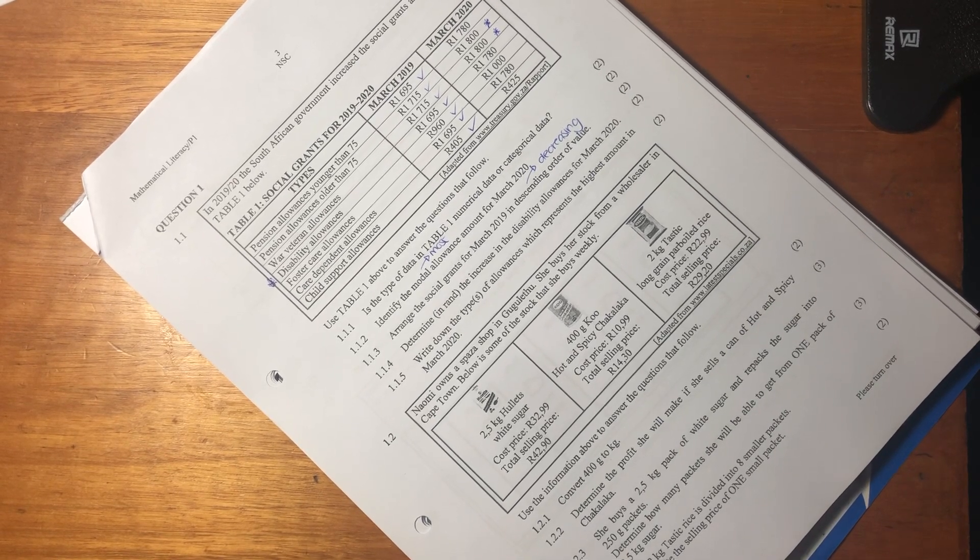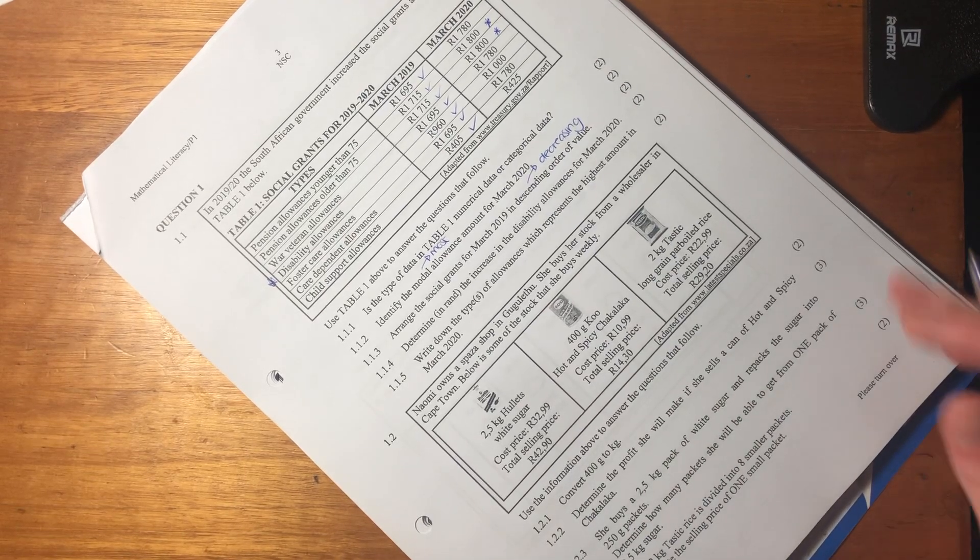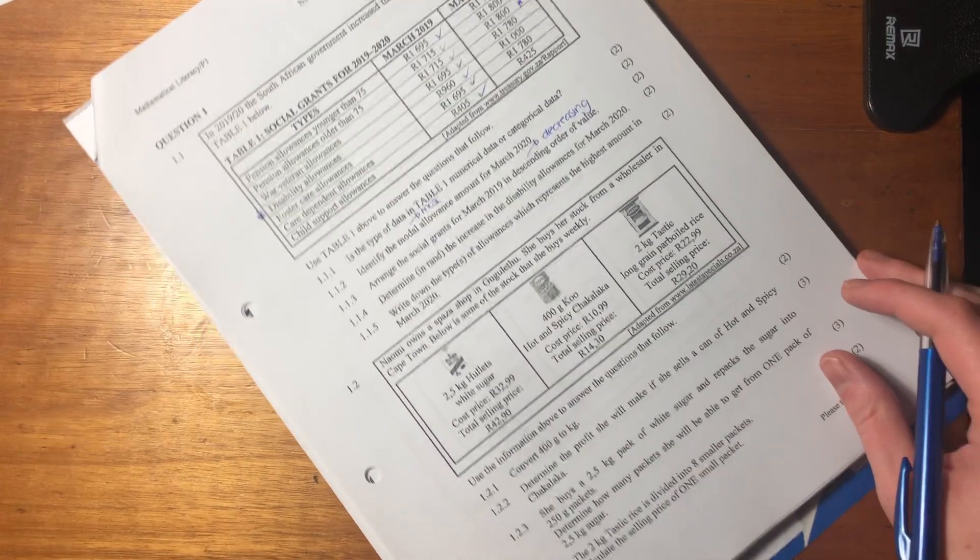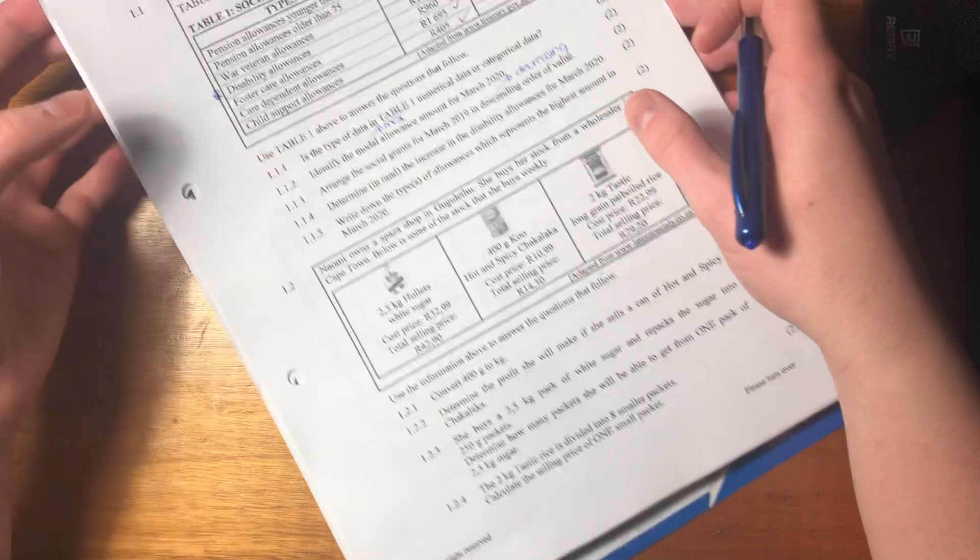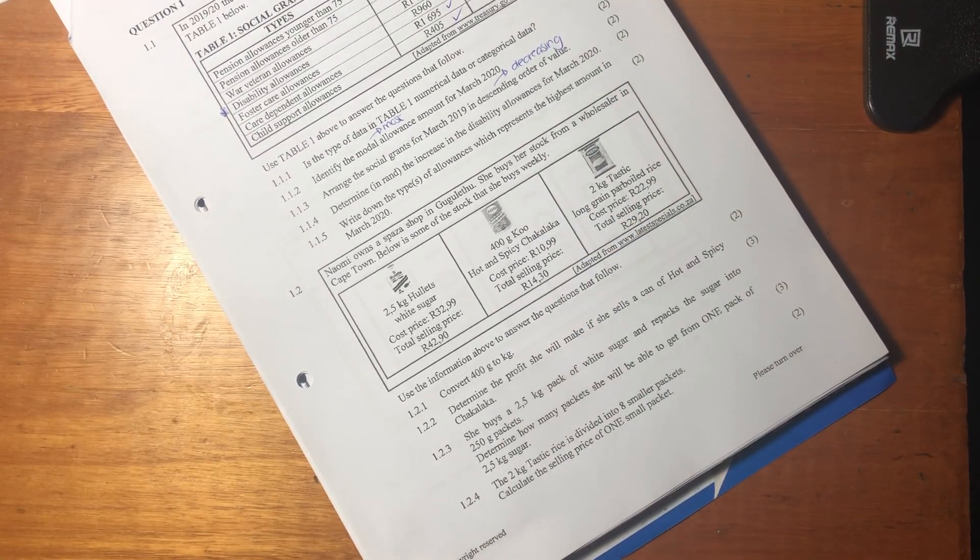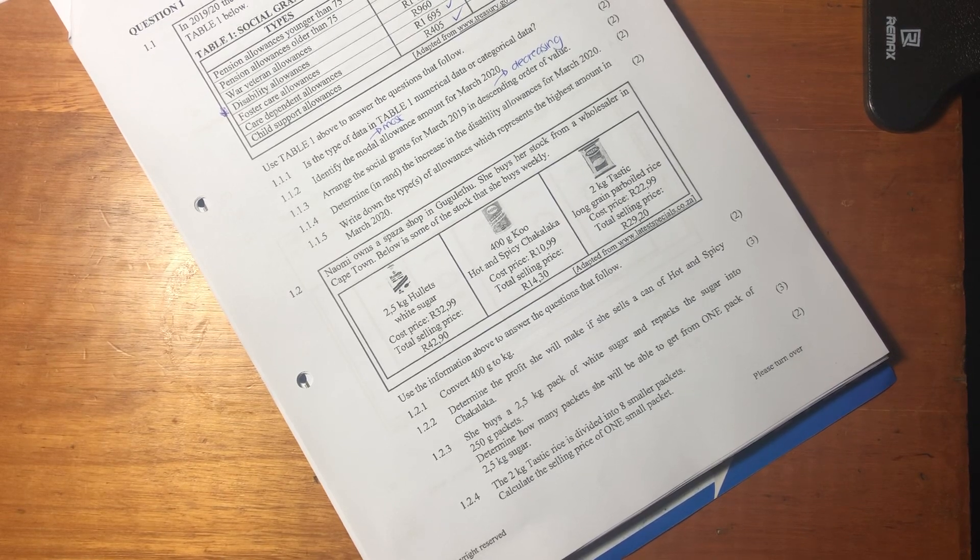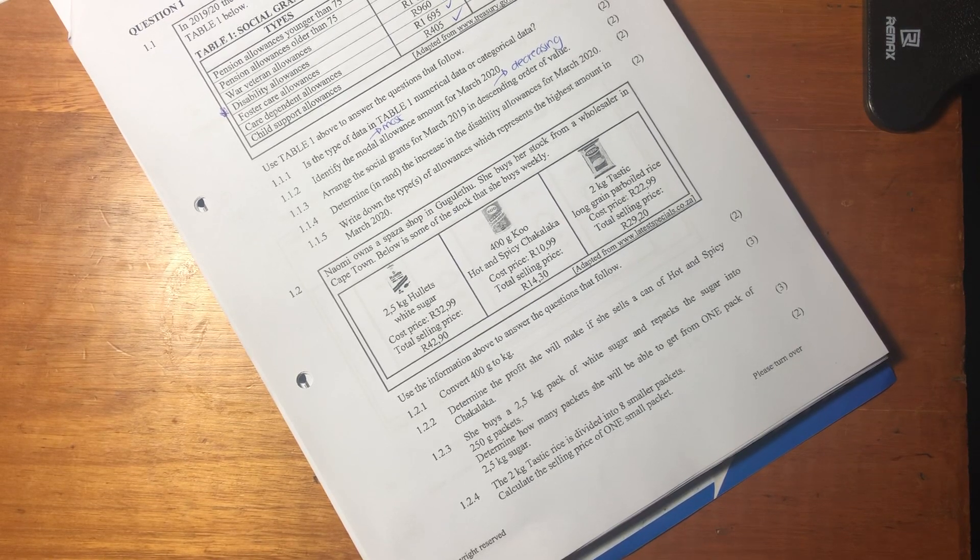Hey everyone, so we've done 1.1, now we're moving on to 1.2. Let's just read the question and see if we can understand the context a little bit better. It says Naomi owns a spaza shop in Gugoletu. She buys her stock from a wholesaler in Cape Town. Below is some stock that she buys weekly.